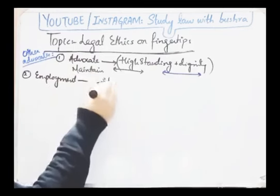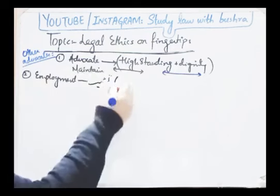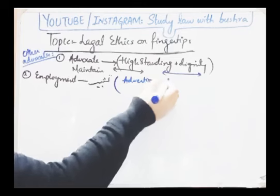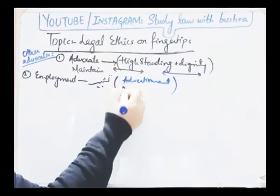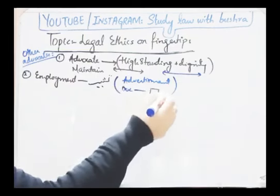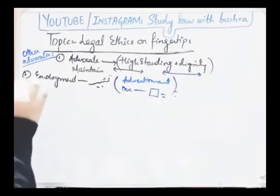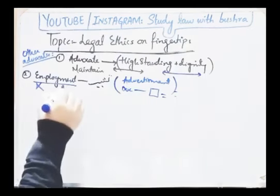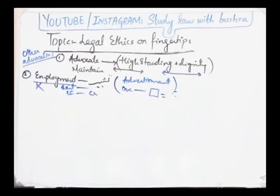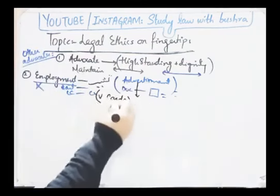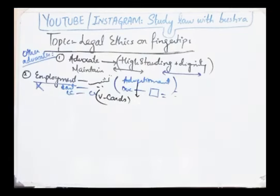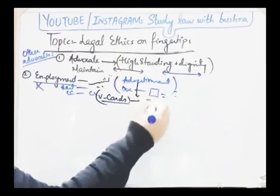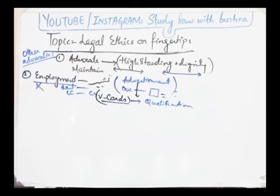Sub-rule doosra kya kehta hai: 'An advocate shall not solicit professional employment by advertisement or by other means.' Doosri baat ki gayi hai ke ek advocate apni employment ki tashheir nahi karega, yani ishtiharat nahi lagaega, advertisement nahi karega, khud ki promotion through advertisement nahi karega. Jaise baaki professions ke log — for example doctors — apni advertisement chala sakte hain, lekin advocate ko is cheez se bilkul mana kiya gaya hai. Advocate advertisement nahi kar sakta ke bail ke cases mein itni fee hogi, criminal case ki ye fee hogi, civil case ki ye fee hogi.